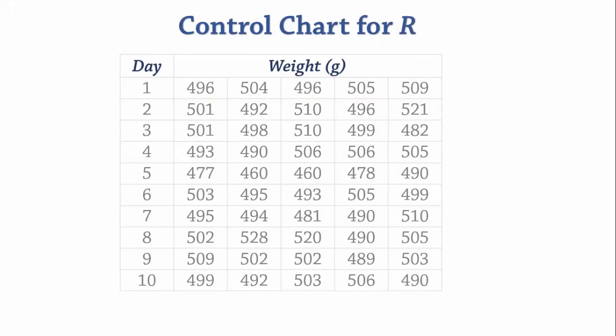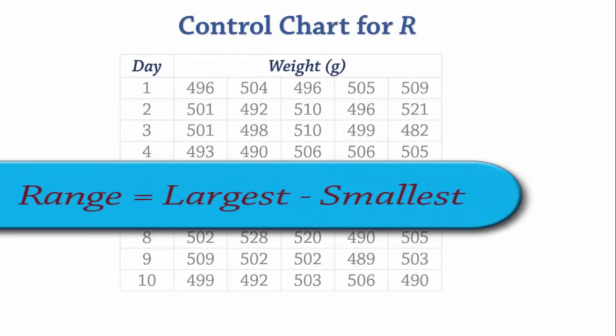The R chart is used to monitor sample ranges and it does provide us with some information about the process variability. The range is the numerical difference between the largest and smallest value in a sample.